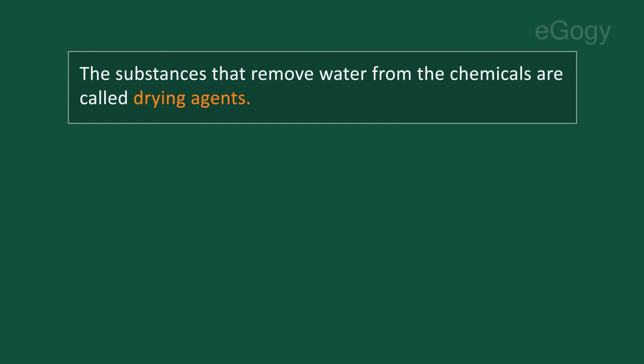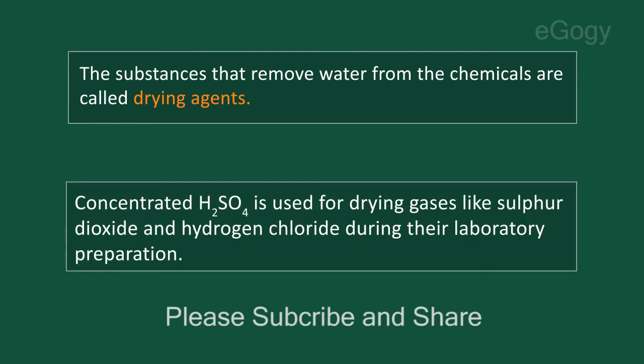The substances that remove water from chemicals are called drying agents. Concentrated sulfuric acid is used for drying gases like sulfur dioxide and hydrogen chloride during their laboratory preparation.